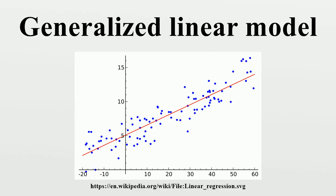Intuition. Ordinary linear regression predicts the expected value of a given unknown quantity as a linear combination of a set of observed values. This implies that a constant change in a predictor leads to a constant change in the response variable. This is appropriate when the response variable has a normal distribution. However, these assumptions are inappropriate for some types of response variables.